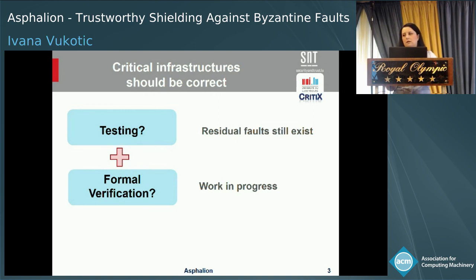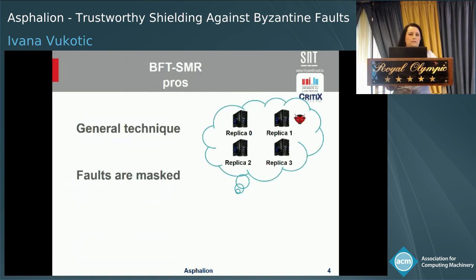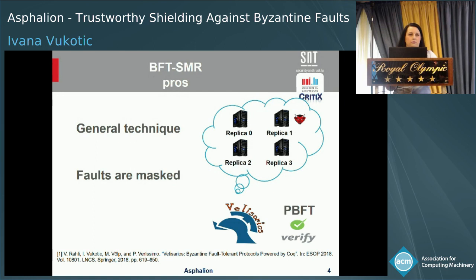Because of that, bugs and attacks are bound to happen in partially verified systems. One standard way to mitigate these issues is to use some fault-tolerant protocol — for example, Byzantine fault-tolerant protocols. BFTSMR stands for Byzantine fault-tolerant state machine replication, a general technique that can be applied to any deterministic service. This technique enables correct functioning of the system even when some parts are under attack or not working correctly, by masking the behavior of a minority of possibly faulty replicas behind the majority of correct replicas.